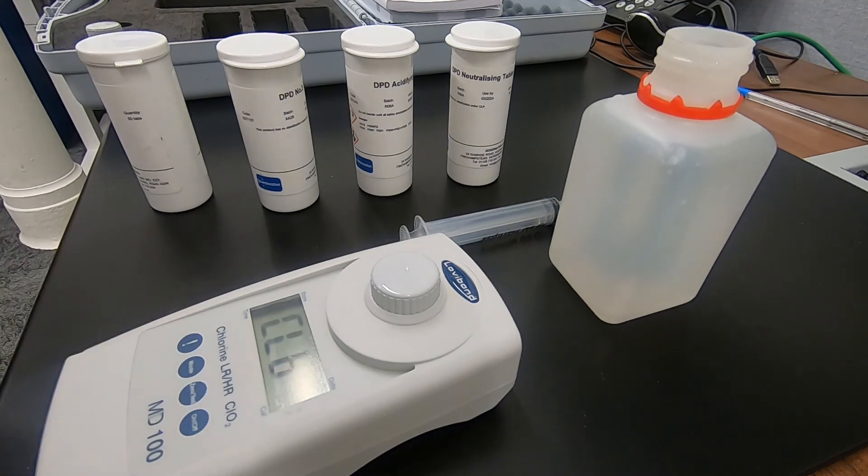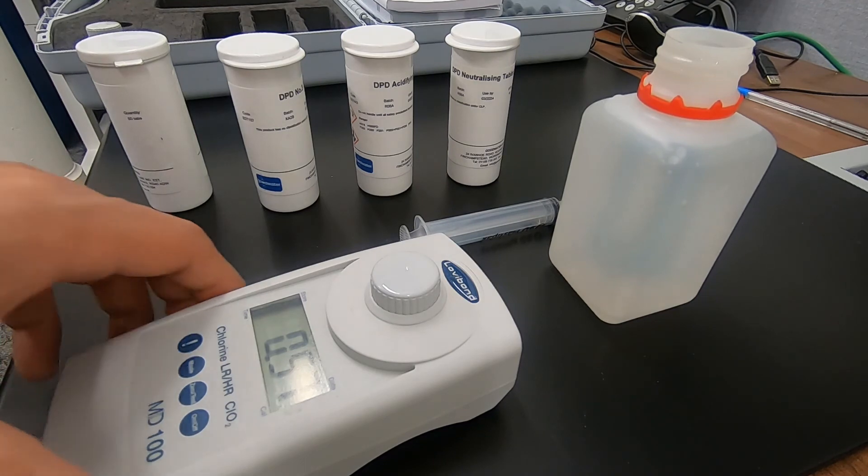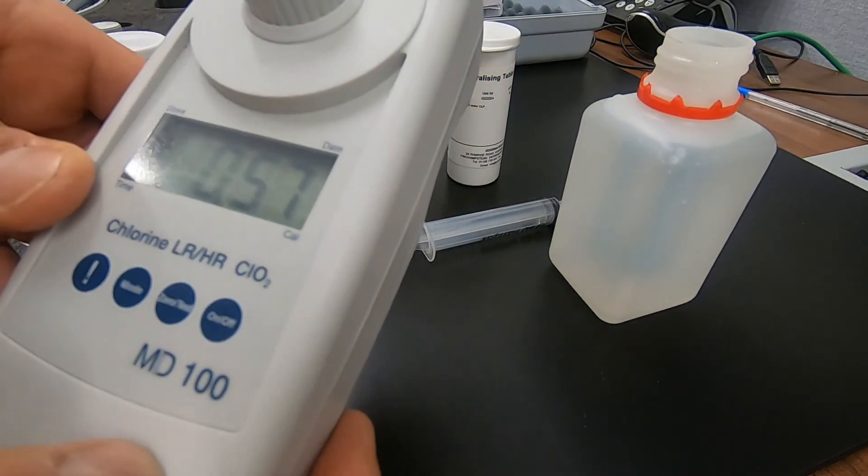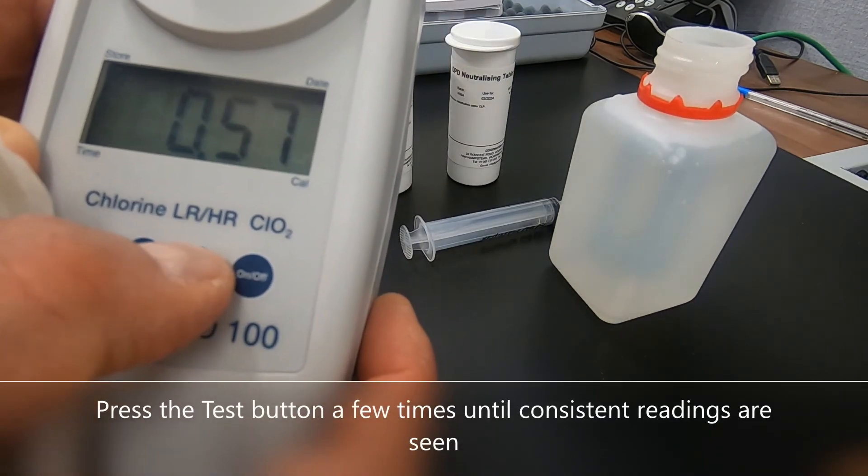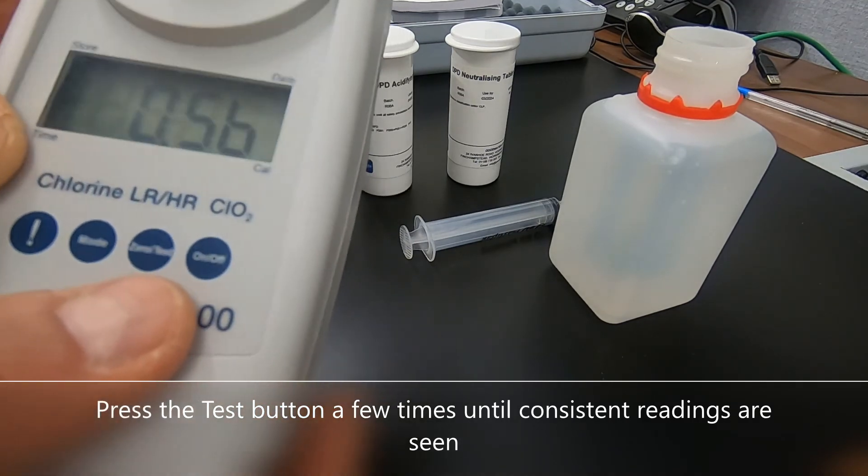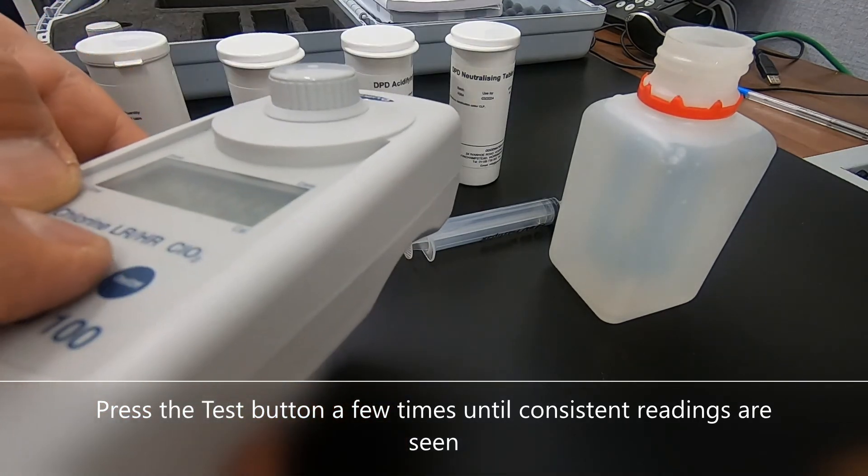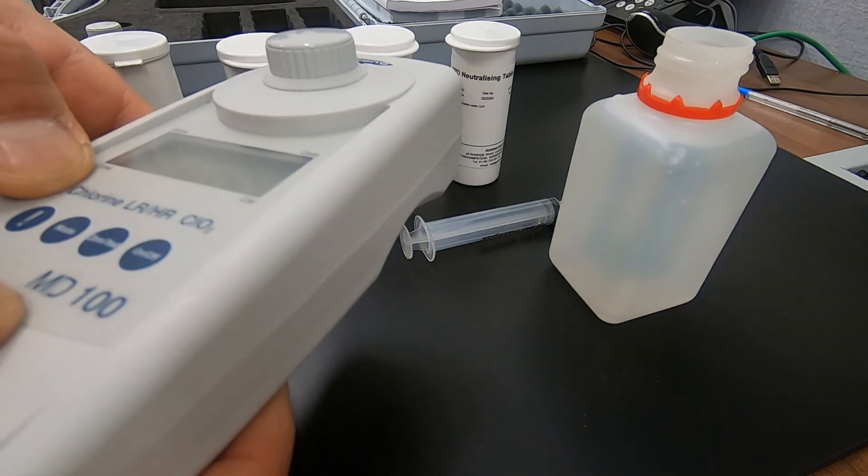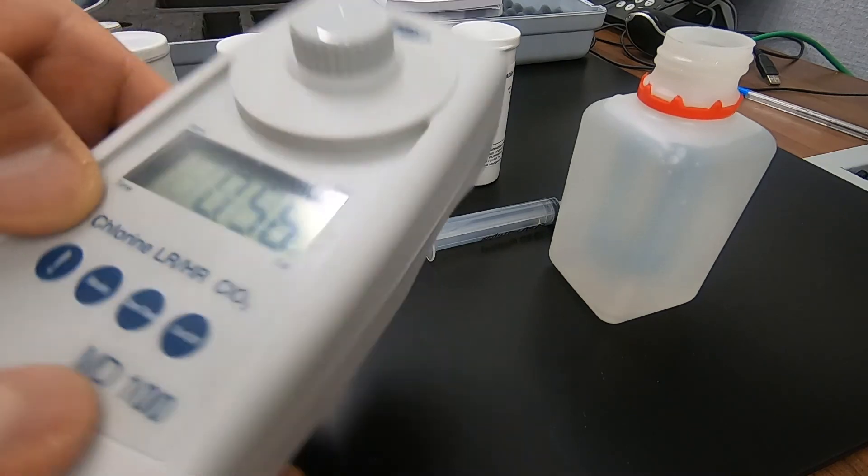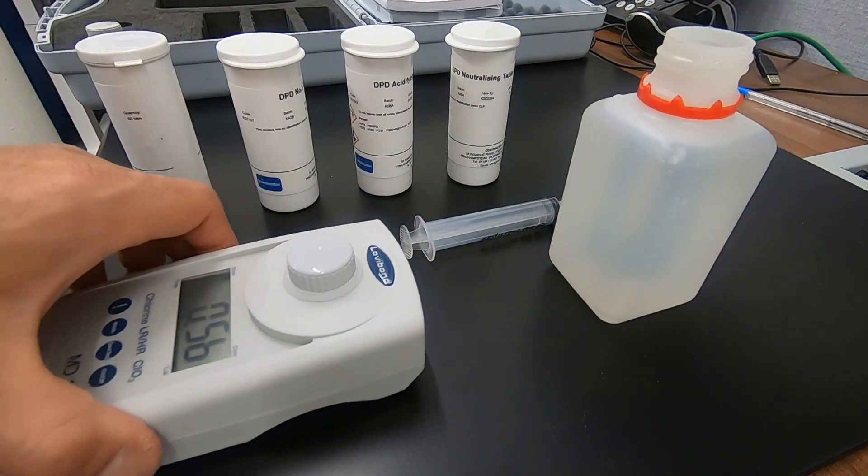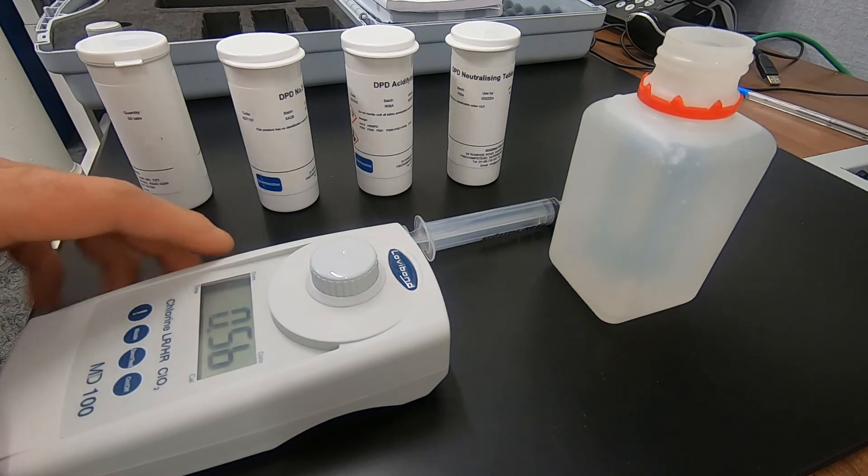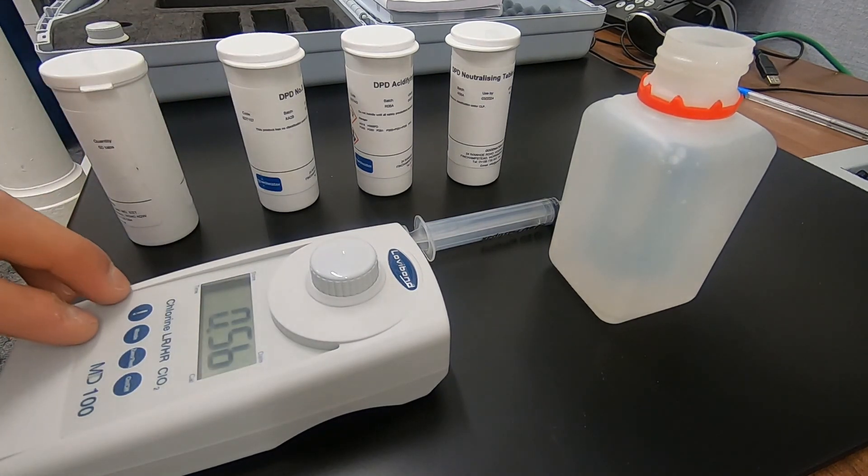And the photometer will now give us a reading. At this point we're getting a reading of 0.57 ppm. We'll hit the test key again. We've got a reading of 0.56. One more time. And we've got 0.56 ppm again. So we've got three very consistent readings there which we can accept as our reading for the total halogens. So all in all that's the process to follow when carrying out the total halogen test.